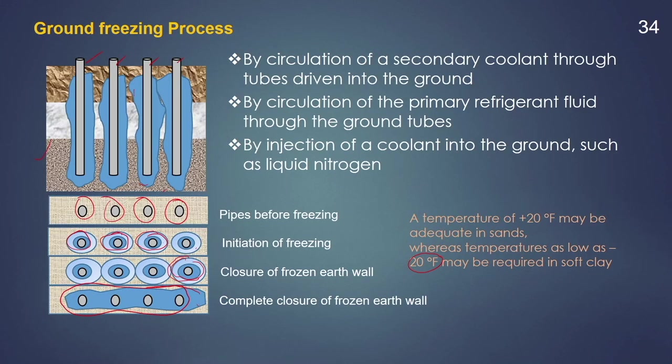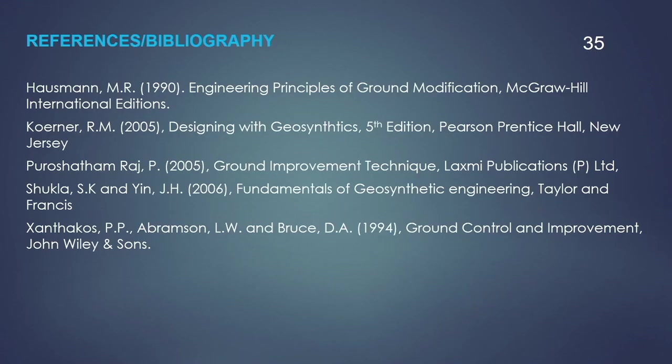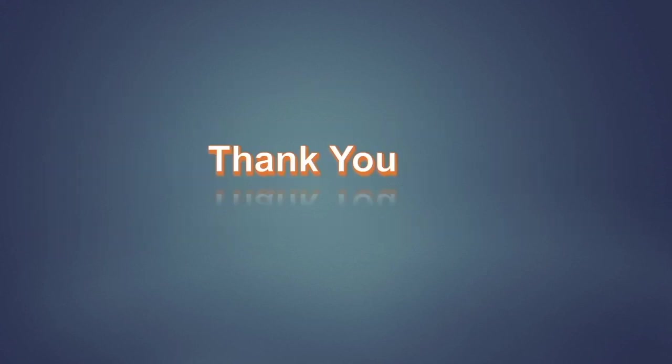These are the different processes of ground improvement by inclusion and confinement. In this module, we learned about different types of ground improvement techniques starting with the mechanical method, then hydraulic method, chemical method, and now inclusion and confinement. Depending on the soil condition and requirements, we have to adopt any of these methods. These are the different references used for preparing this lecture. Thank you.